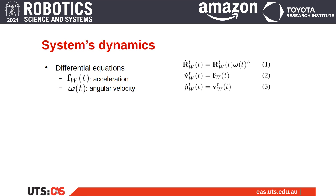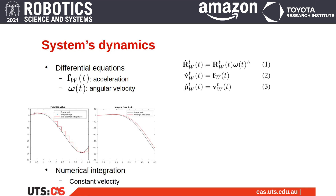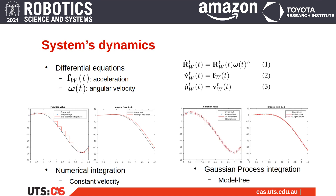In the literature, this equation is generally solved numerically based on the assumption of constant angular velocity between IMU measurements. This type of assumption can lead to poor accuracy, as shown in this simple toy example where the constant velocity model is used.